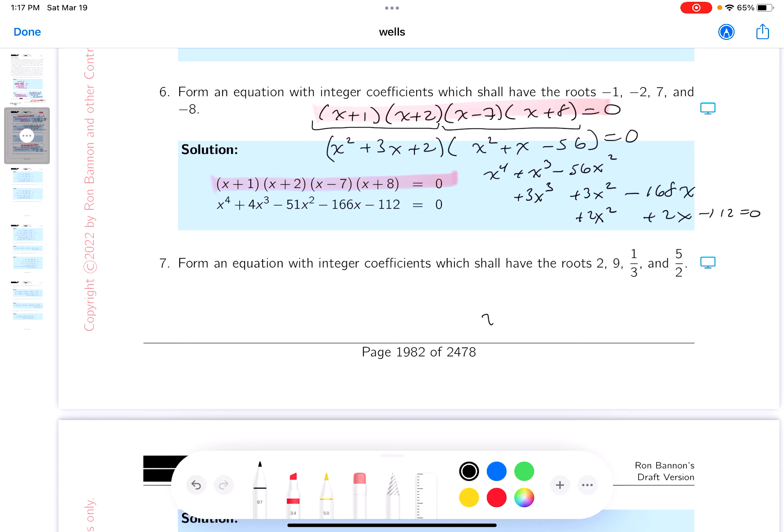Combine things together. You get x4, 4x cubed. Oh boy, it's going to be a tough one. Looks like minus 51, right? That looks like minus 166 and minus 112.